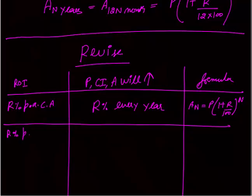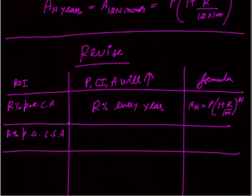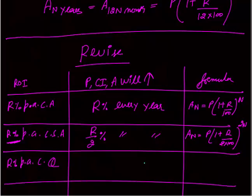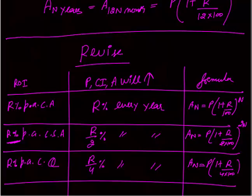For R% per annum compounding semi-annually, the formula is: A = P × (1 + R/2/100)^(2N). For R% per annum compounded quarterly, the rate of interest per quarter is R by 4, so your principal, compound interest, and amount will increase by R by 4% every quarter, and the formula is: A = P × (1 + R/4/100)^(4N). In the same way you can calculate for monthly compounding.